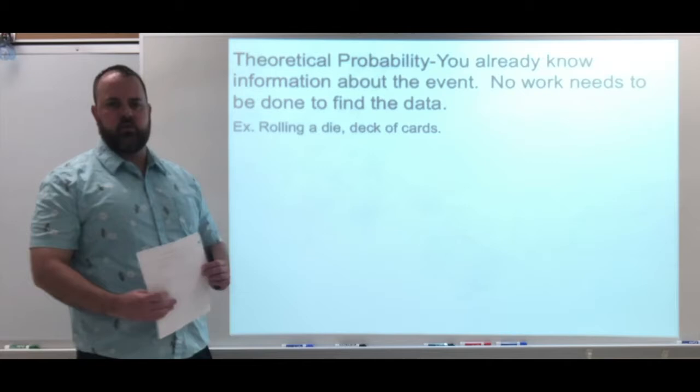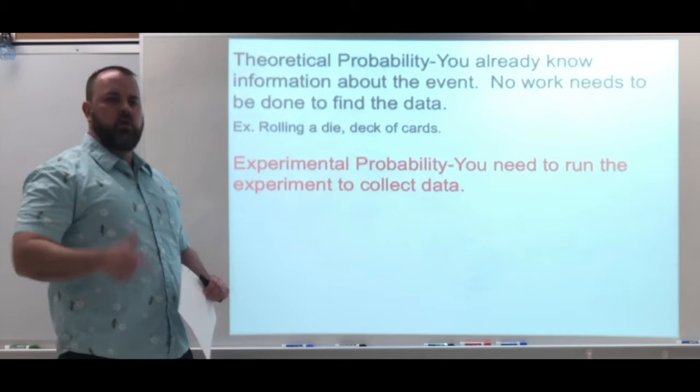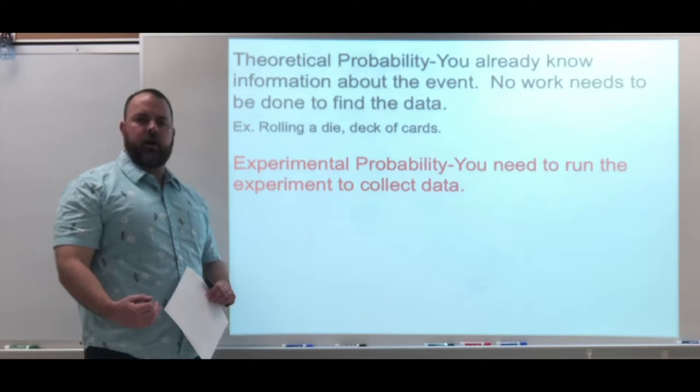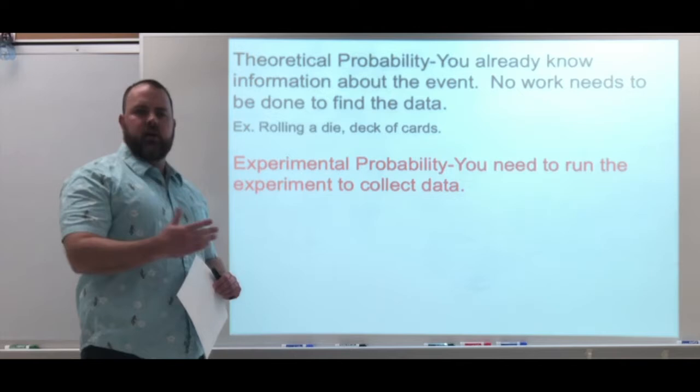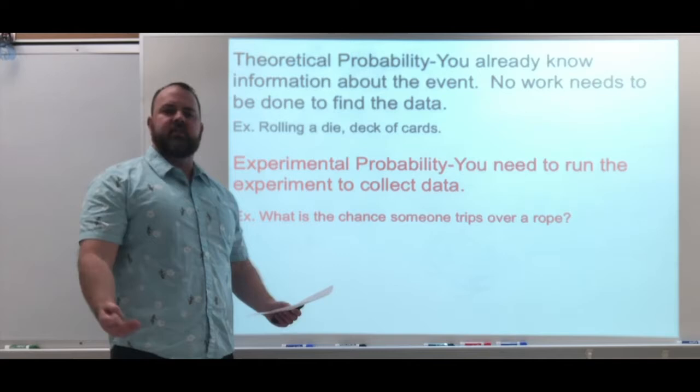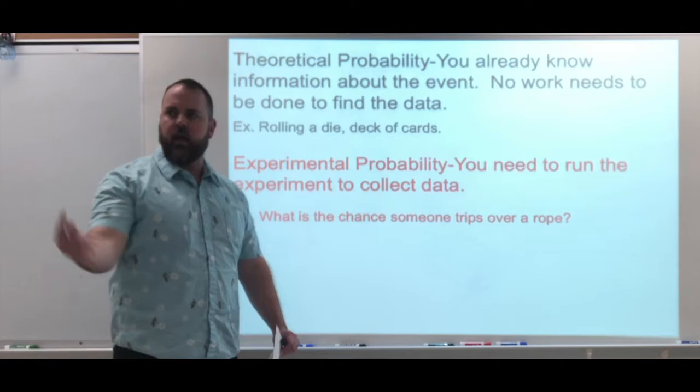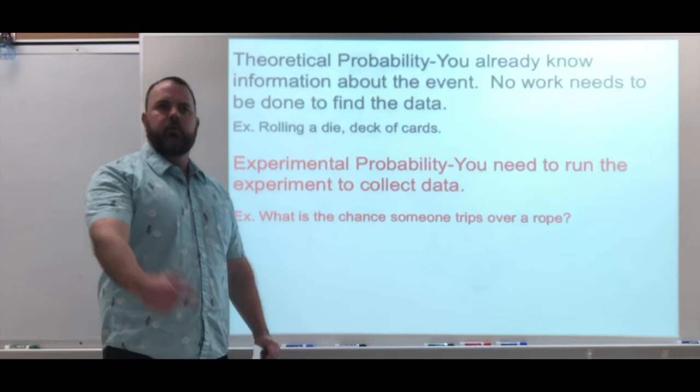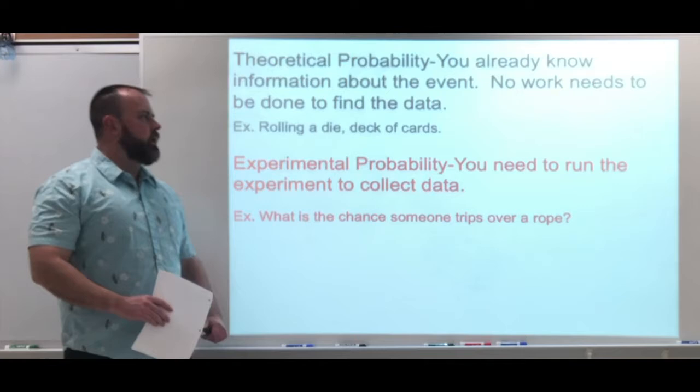Experimental probability is where you need to run the experiment — you need to go forward and collect data to figure out the probability. Every trial that you run is considered part of your total, and you're going to count successes and failures depending on what your event is. For example, what's the chance someone trips over a rope? If I put a rope across the hallway, I'd have to sit and watch — each person that walks by is a trial, and I'd count who fell and who didn't, collecting that data.